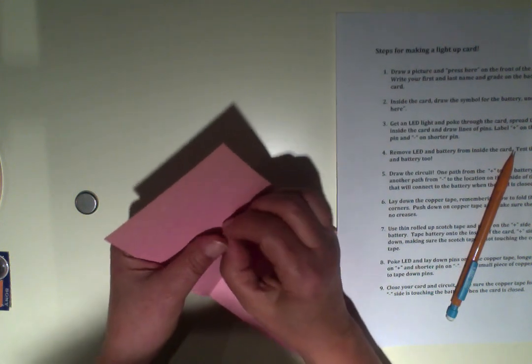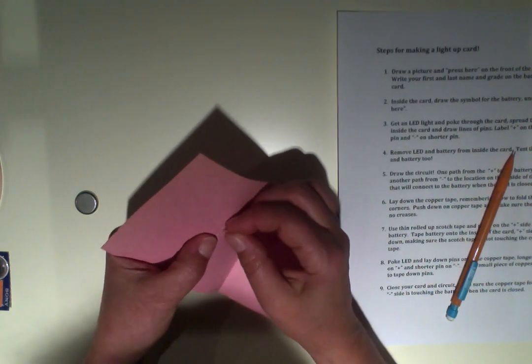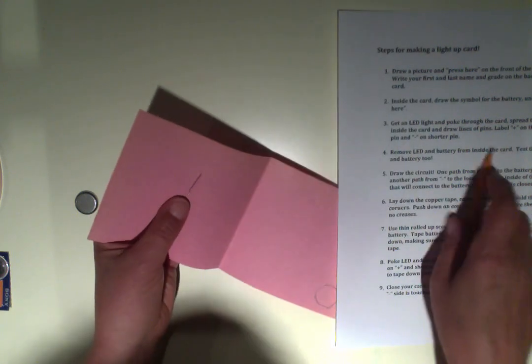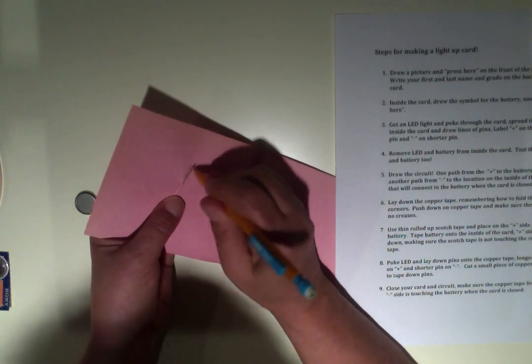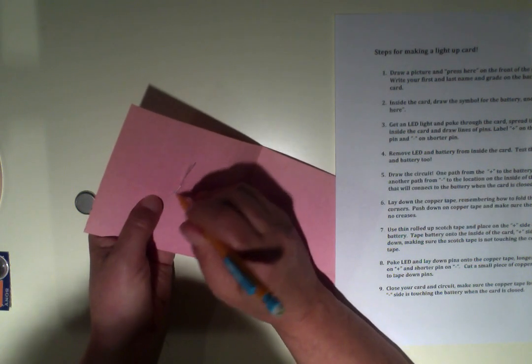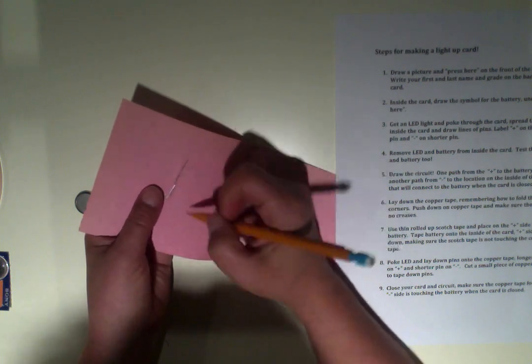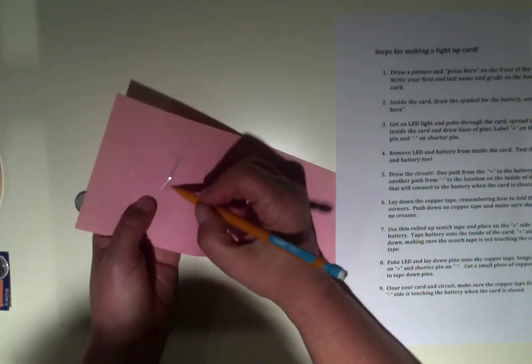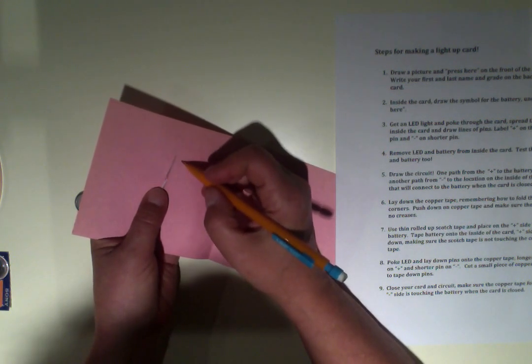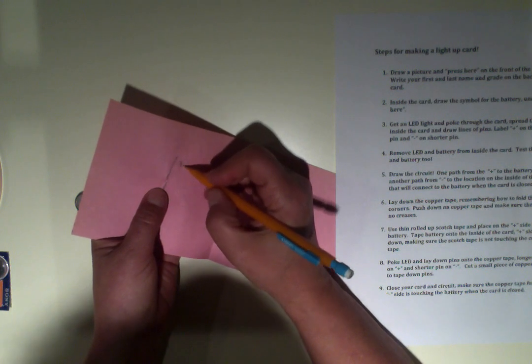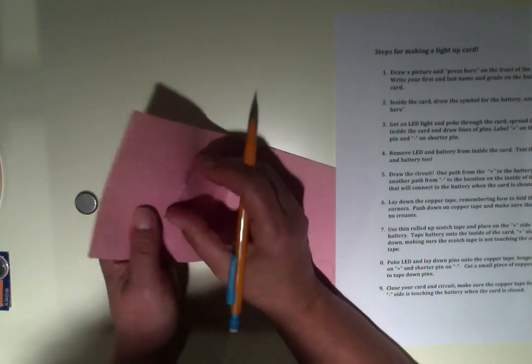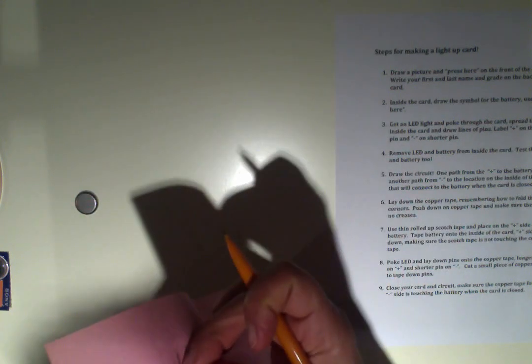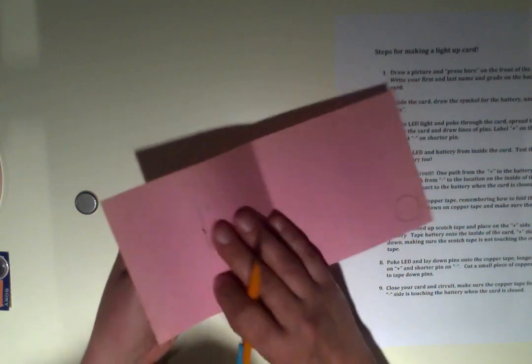Now, the next thing you should do is open up the pins and draw out where they are so that when we tape down the copper tape, we know where to start it out. And this is the longer pin, so I'm going to put plus over here, minus over here. Let's make sure that's the longer side, yeah.